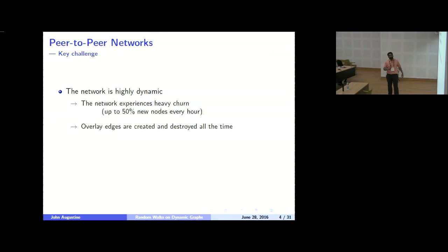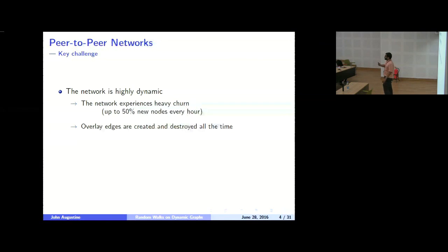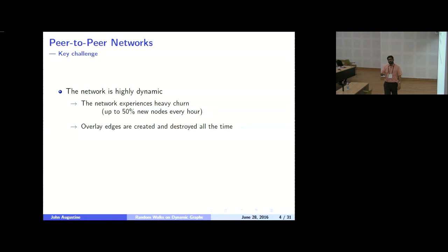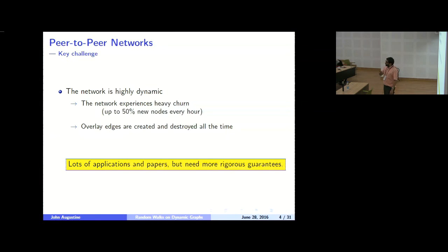In peer-to-peer networks, the key challenge is churn. Empirically, in every hour, 50% of the nodes are renewed. Nodes leave and come into the network because you log in, accomplish your purpose, and log out. Nodes don't persist forever. This heavy churn means we need to be careful in how we design algorithms. Our main interest was to understand what makes robust peer-to-peer networks so robust, and can we mimic that theoretically and prove something robust about them?